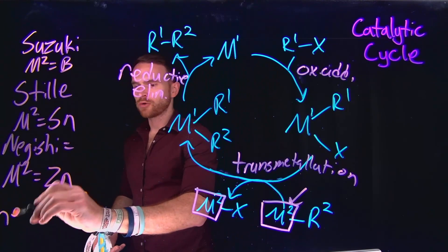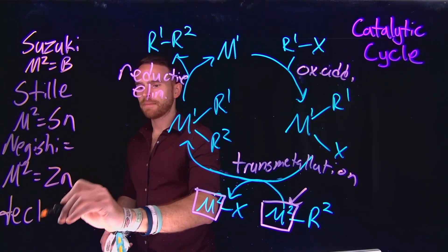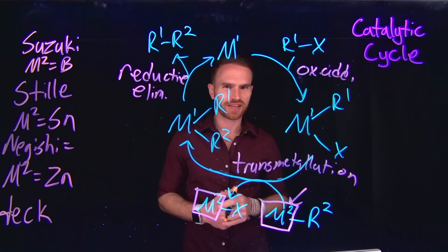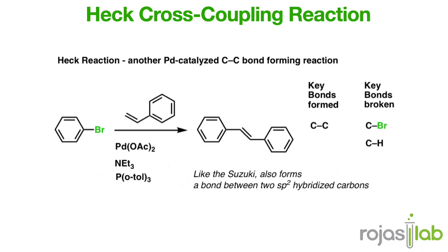And then the final one that we're going to learn about is called Heck coupling. Heck coupling is a little bit different, which we'll talk about now. In this process, palladium catalysts facilitate the coupling of aryl or vinyl halides with alkenes, leading to the formation of new carbon-carbon bonds.